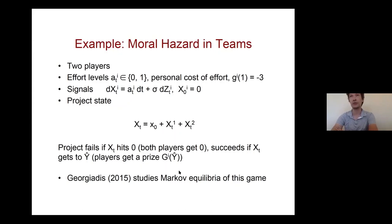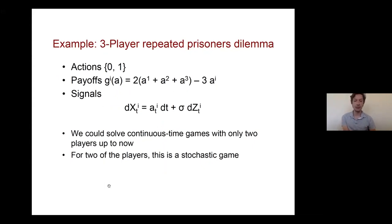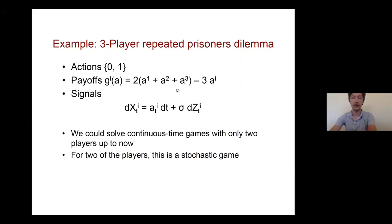This example is related to Holmstrom's classic moral hazard in teams paper, and a paper by George Artis studies Markov equilibria in this specific setting, providing a comparison. The second example is a three-player prisoners' dilemma — a repeated game without payoff-relevant states, where signals are pure information about actions. Each player has two actions: defect or cooperate. Cooperating is costly but contributes to the welfare of all players. With two players there is a known characterization, but with three players it remains unknown.